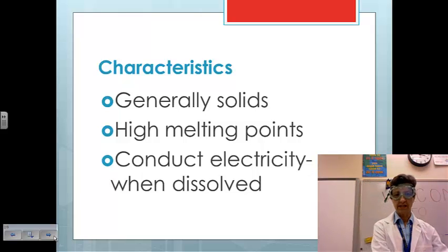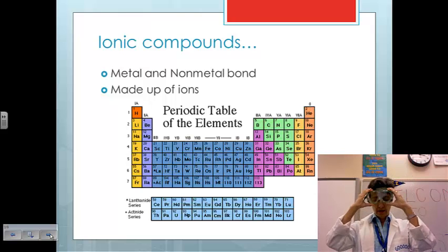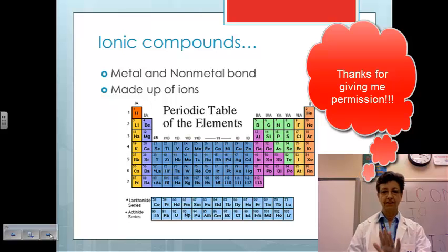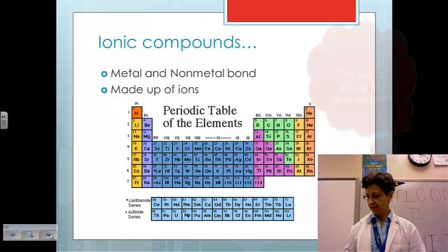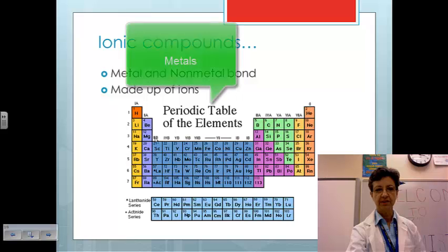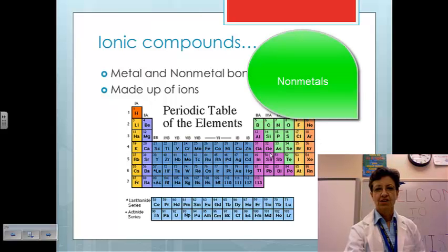Let me put this to the side. Here we have the periodic table. I can take this off now. We have on the left-hand side the metals. Remember the zigzag line right here? Everything to the left are metals. All of these are metals. And to the right of the zigzag line are the non-metals.